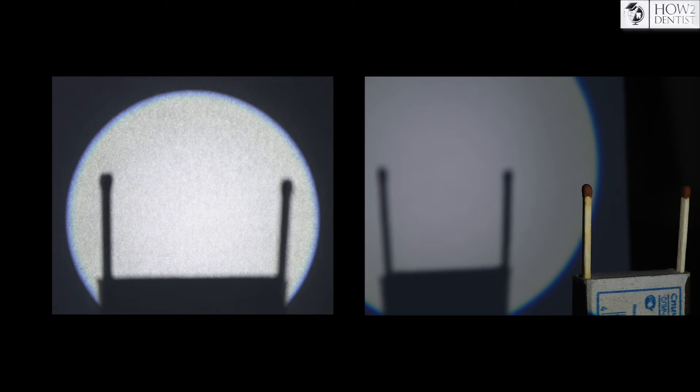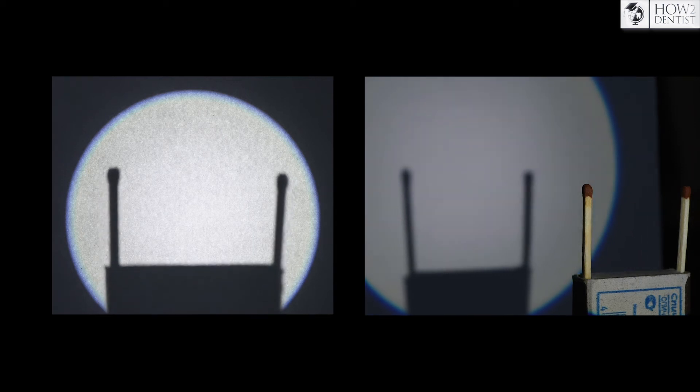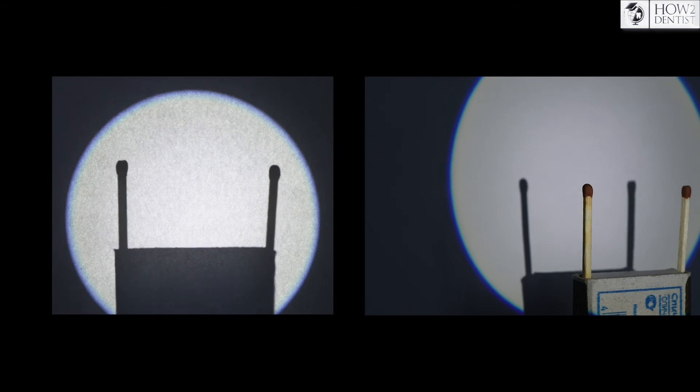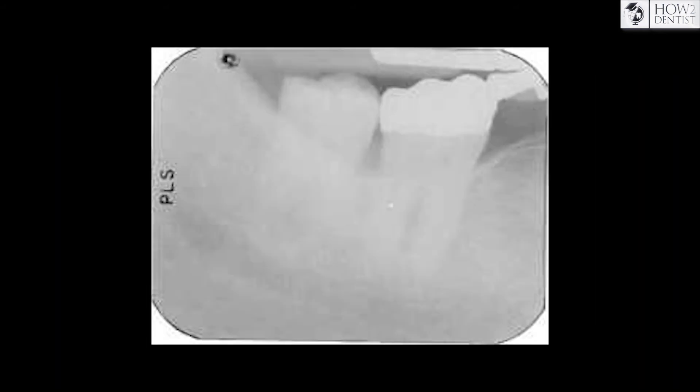The recommendation to place the sensor as close as possible to the tooth can also be illustrated by our example. When the sensor is moved back, the sharpness begins to decrease. In this example, you see a scan where the sensor is too far from the tooth.